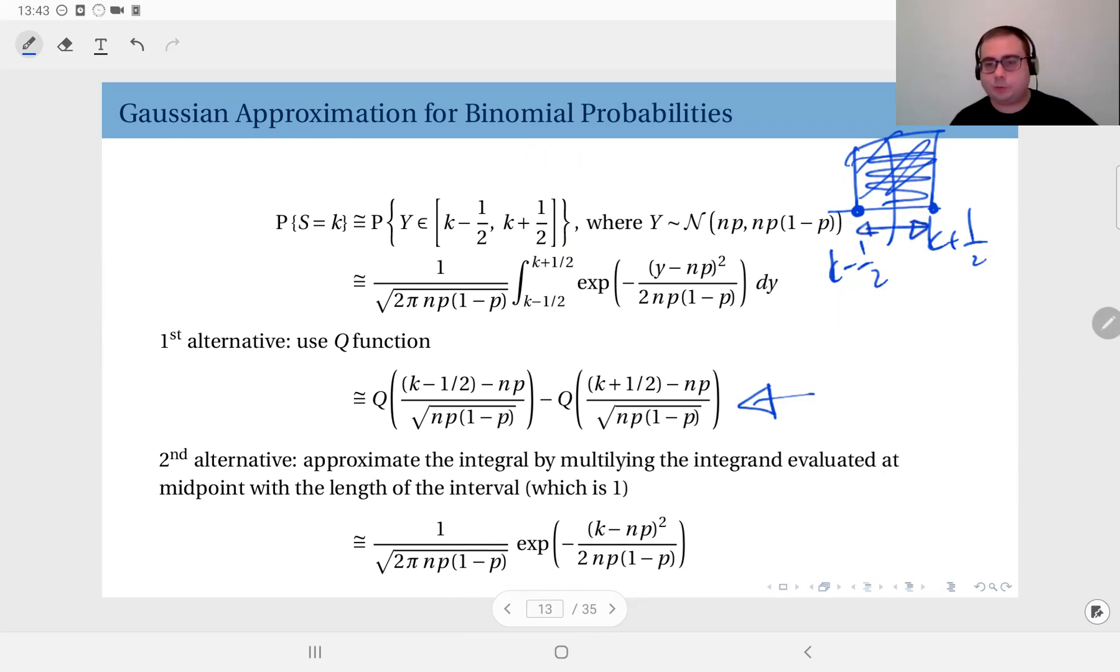You just compute the function at the midpoint and multiply that with the interval length which is one. So you approximate this area as a rectangle, which is the same as a rectangle. That's easier to compute.